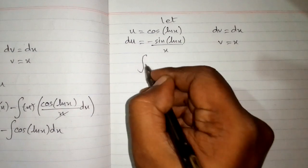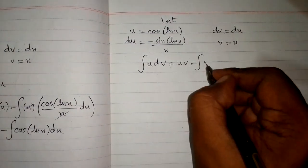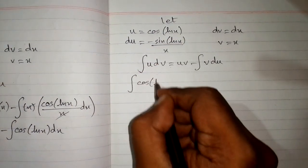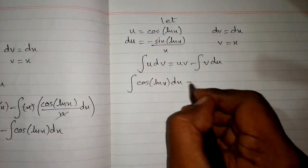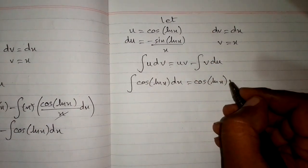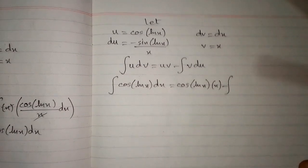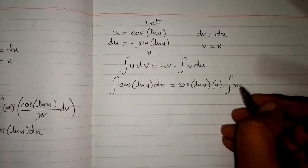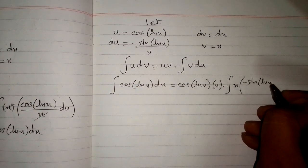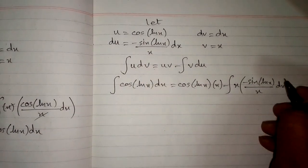The formula for integration by parts is integral of u dv equals uv minus integral of v du. We put u equal to cosine of ln of x, v equal to x, and du equal to minus sin of ln of x upon x dx. We write dx because this is a differential.